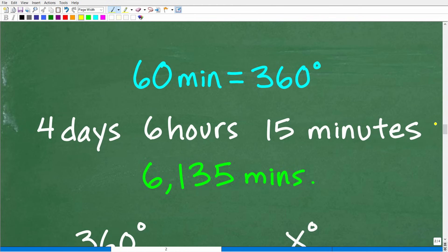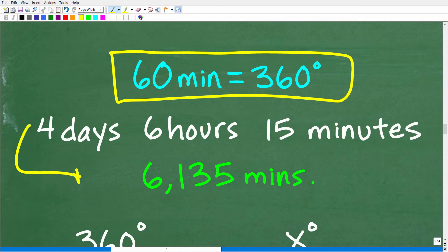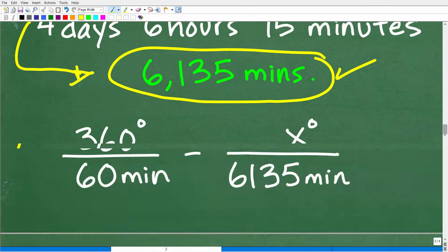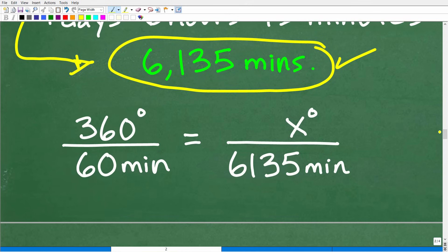So the problem really distills down to this. So for every 60 minutes, you're going to cover 360 degrees. And we now know that the time of four days, six hours and 15 minutes is equivalent to 6,135 minutes. So how many degrees elapsed during this period of time? Well, there's a couple of different ways you can approach this. Some of you can be like, well, I can divide this, multiply by this. But this is where a lot of people can get confused and make a mistake. So I think the safest route for most people is to set up a lovely proportion. Okay. So proportion is simply two equal fractions. So we know there's 360 degrees for every 60 minutes.